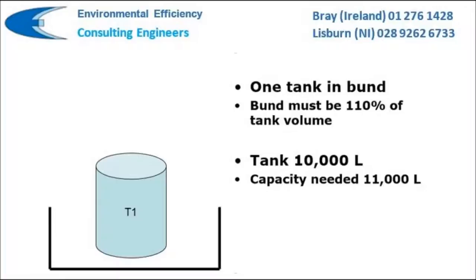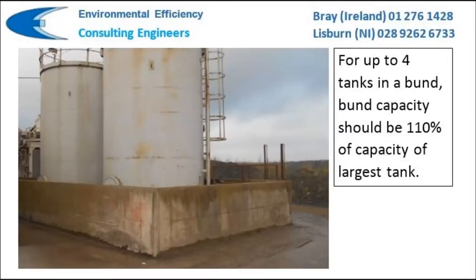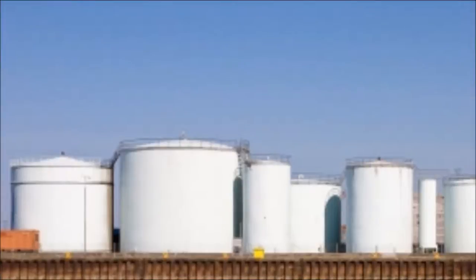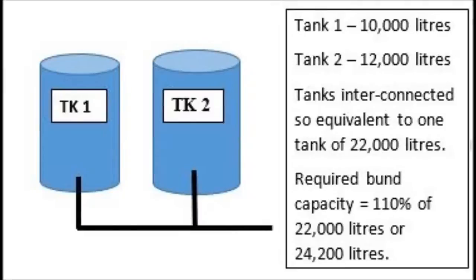If there is only one tank in a bund, the general rule simplifies to requiring the bund capacity to be 110% of the tank, as this is clearly greater than 25%. For 2, 3, or 4 tanks in a bund, the 110% rule still applies as this will always be greater than 25% of the total. For more than 4 tanks, 110% of the capacity of the largest tank needs to be found and then compared to 25% of the total tank capacity. Whichever quantity is the greatest is the required capacity of the bund.